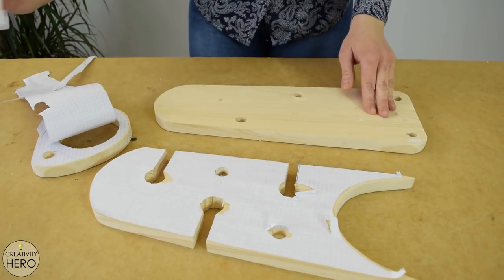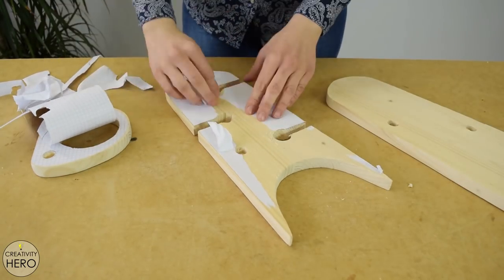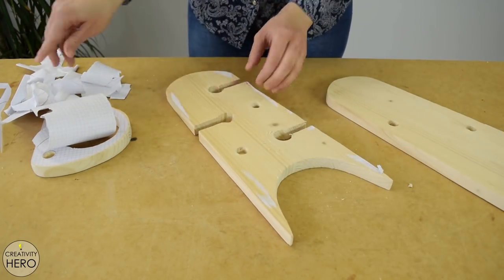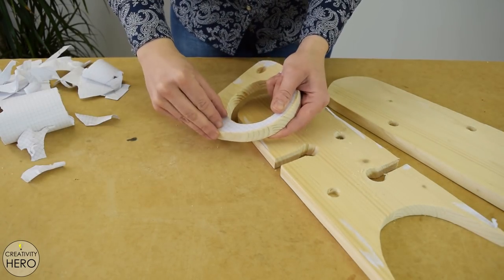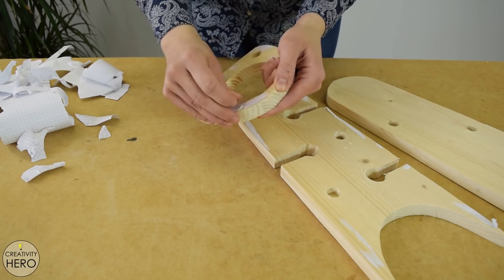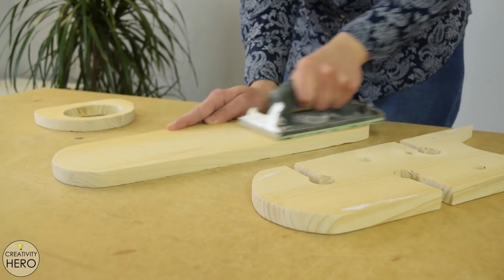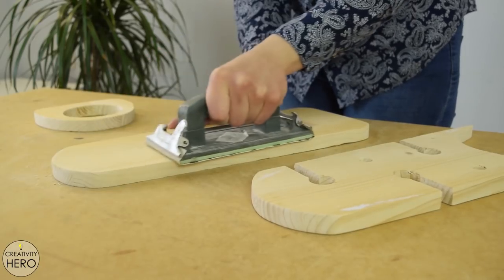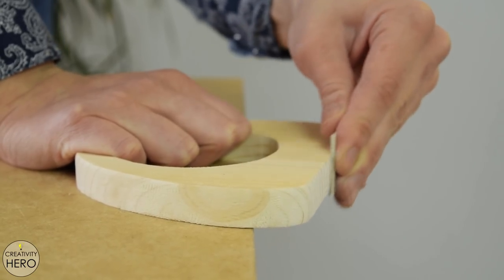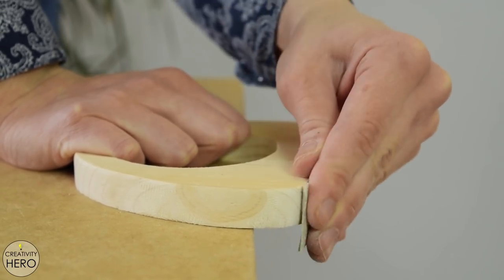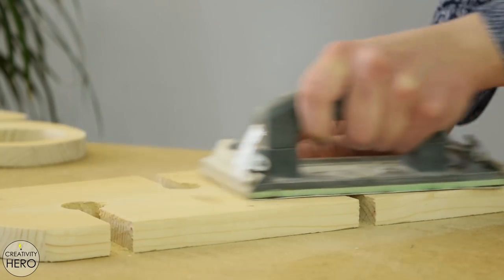Now that I'm done with all the cuts and holes I can peel off the paper. It came off very easy. The next step is sanding. I used 120 then 220 grit sandpaper to make the wood as smooth as possible.